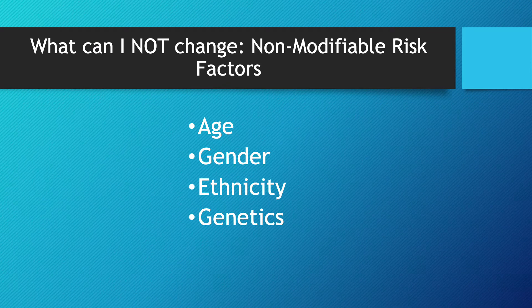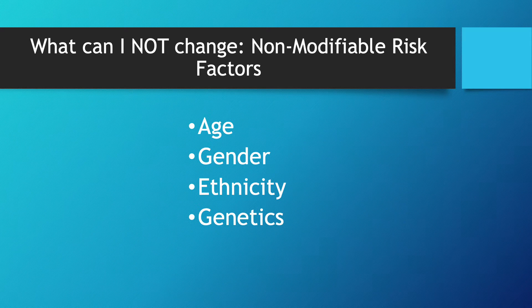Let's first talk about the difference between non-modifiable and modifiable risk factors. Your non-modifiable cardiac risk factors are going to be age, gender, ethnicity, and genetics. Depending on what type of cardiovascular disease you're talking about, most people are going to be more at risk as they get older. Men in their 40s and 50s are usually more at risk, whereas once we hit 70, women live longer, so women are more at risk as they get older.